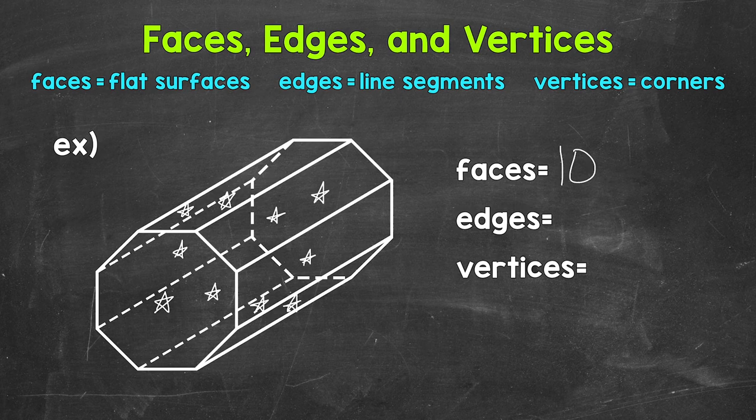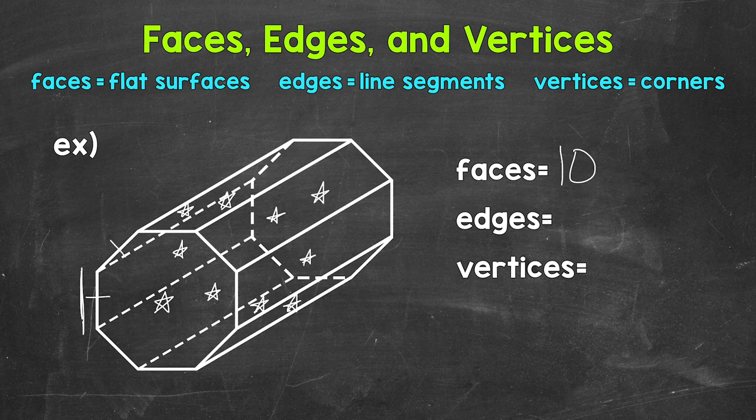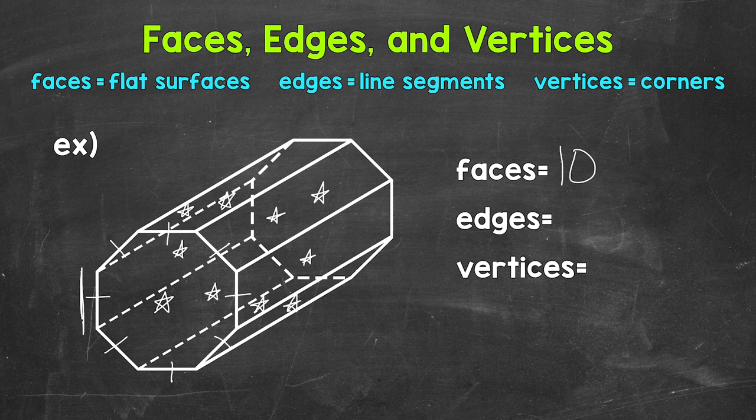Now let's identify and count the number of edges. So the line segments that are formed by two faces meeting. For example, this is an edge right here. So let's start here with one and then go around the front here. Two, three, four, five, six, seven, eight edges.